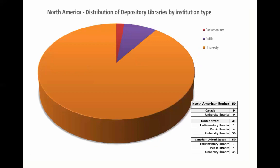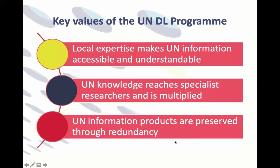This chart shows the distribution of a total of 50 Depository Libraries in Canada and the United States by type of library. 45 of them are part of university libraries, four are located in larger public libraries, and one belongs to a parliamentary library, the Library of Congress in the US. About five years ago, the existence of the program came under threat, which prompted the UN Library to reflect on and determine the value of having a network of Depository Libraries. At the time, several key values were identified.